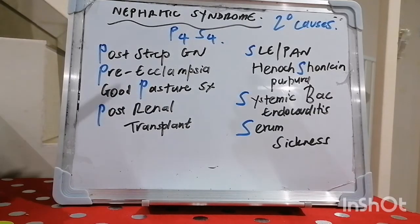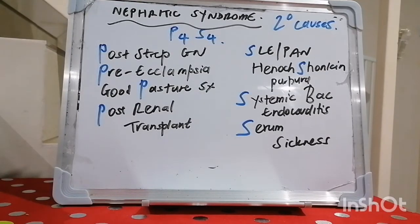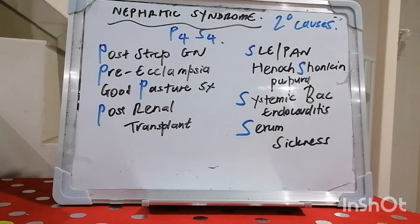Of course, we have the primary flavors and the secondary flavors. Primary examples include membranoproliferative glomerulopathy type 2, and rapidly progressive or crescentic glomerulopathy, which includes anti-GBM disease, immune complex-mediated, as well as IgA nephropathy.